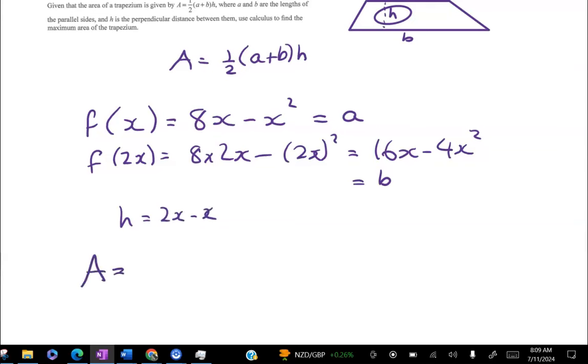And now we're good to go. We've got an expression for the area of the trapezium. And it will be ½ times x, because that's the expression for the height, times 8x - x² + 16x - 4x².